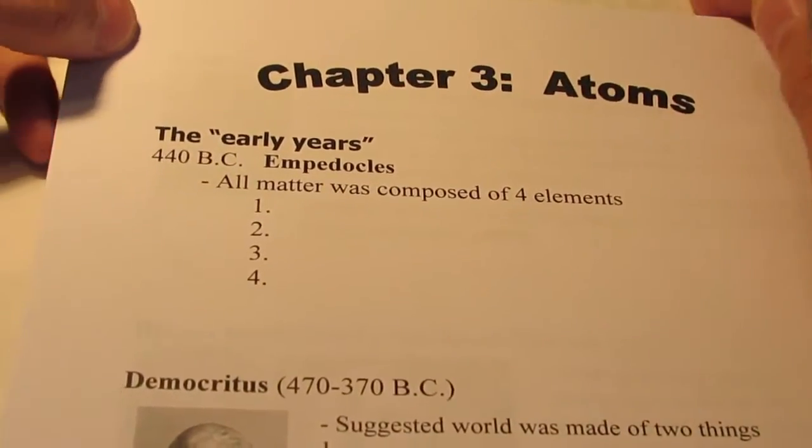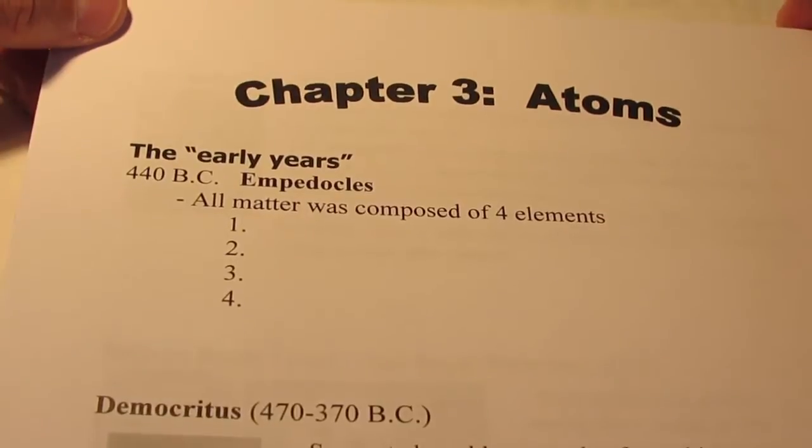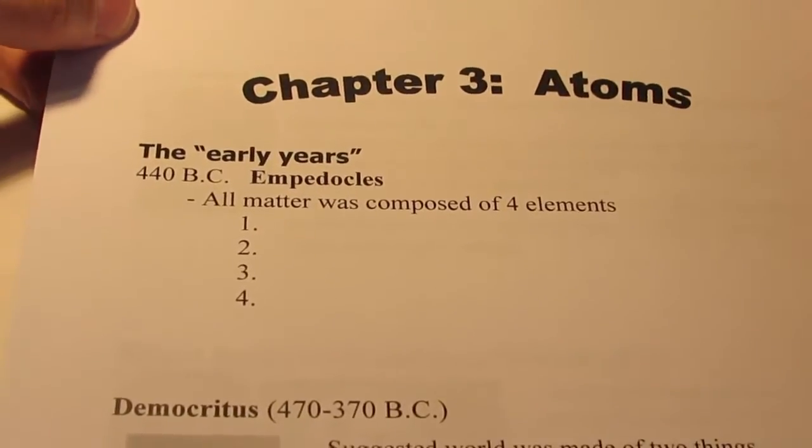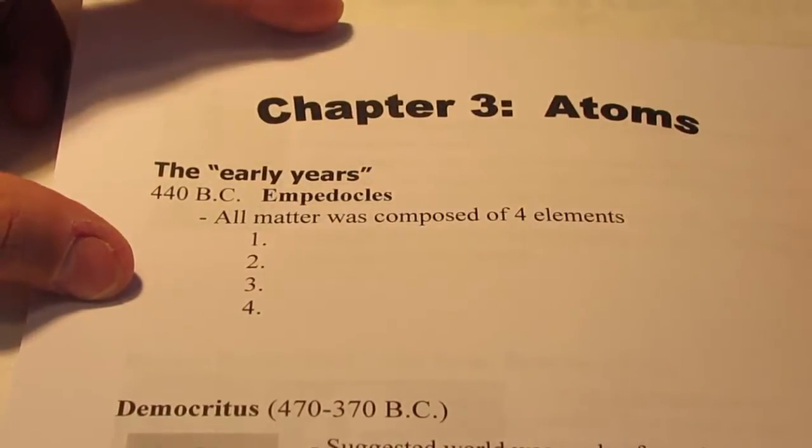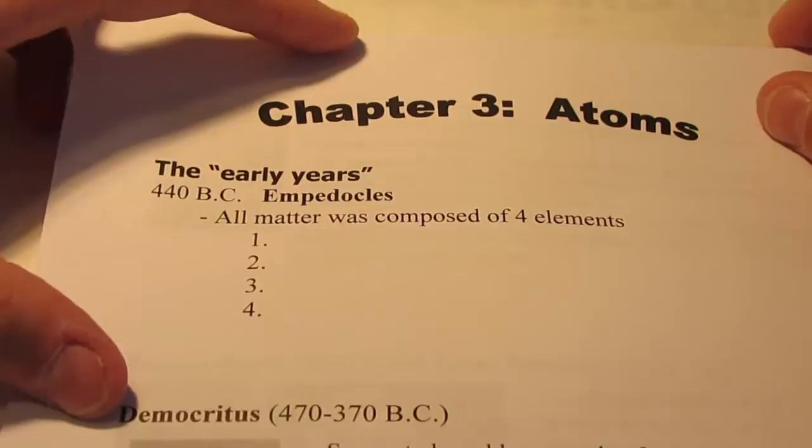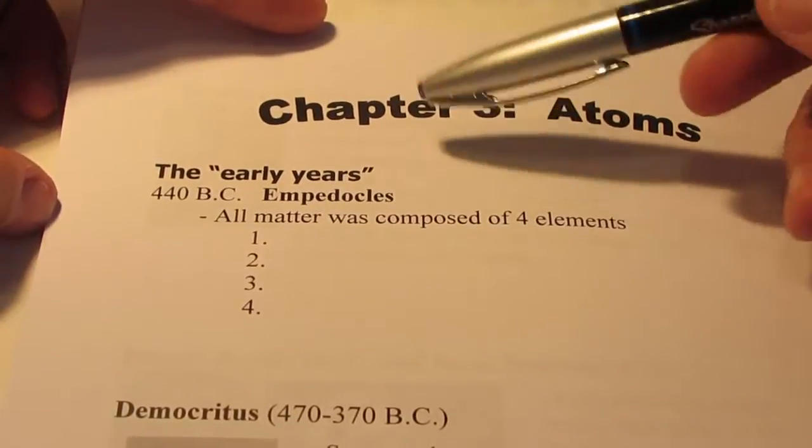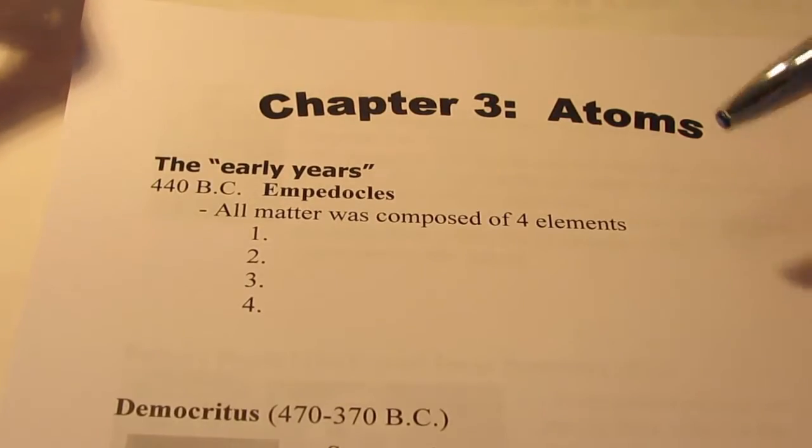Okay, we're about to begin Chapter 3 today, and Chapter 3 deals with the Atomic Theory. We're actually going to start back several hundreds of years ago, back to 440 B.C. We're going to talk about what early philosophers felt that matter was composed of.